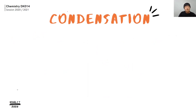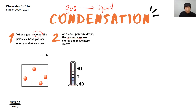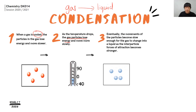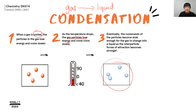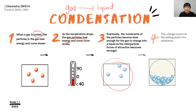Condensation happens when gas changes into liquid. For condensation to happen, the gas is cooled. When the gas is cold, the gas particles lose energy and move slower. As they move slower, the distance between the gas particles becomes closer. The inter-particle forces become stronger and more significant, and up to a point when the particles are close enough, liquid is formed.